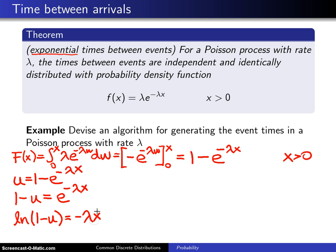Finally, we will divide by negative lambda. When we do that, we will get x = -(1/λ) × ln(1 - U).